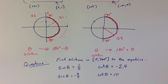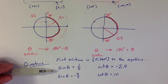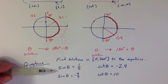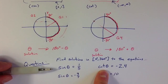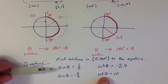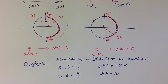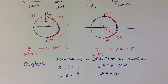Let me end the video with a couple of practice questions. I encourage you to take a few minutes and try to solve these equations looking for solutions between 0 and 360 degrees: sine of theta equals 1 fifth, sine of theta equals negative 4 over 7, cotangent of theta equals negative 2.4, and cotangent of theta equals positive 10. I'll post answers in a separate video, but try to work on them before looking at the solutions.